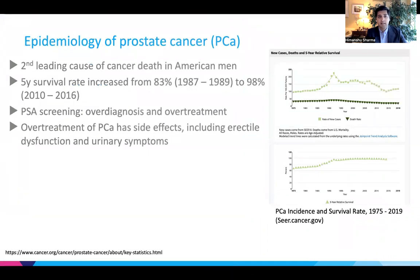Prostate cancer is the second leading cause of cancer death in American men. The survival rate has increased substantially from 83% in the 80s to 98% nowadays. Some of that is driven by better treatment, another driver is better screening, namely through PSA. However, PSA screening has led to substantial over-diagnosis and over-treatment of prostate cancer, which has side effects including erectile dysfunction and urinary symptoms.